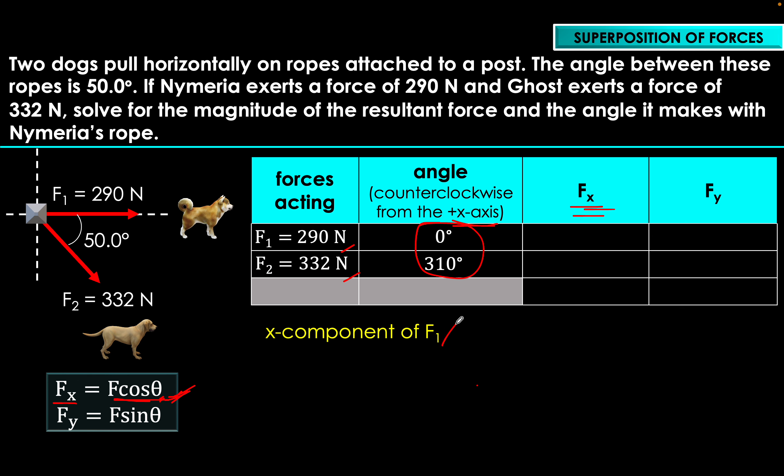Solving for the x-component of force number one (Nymeria): Fx₁ = F₁ cosine θ₁ = 290 Newtons × cosine(0°) = 290 Newtons. This is actually obvious since Nymeria's rope is horizontal — whatever the tension is along that rope is automatically your Fx value.